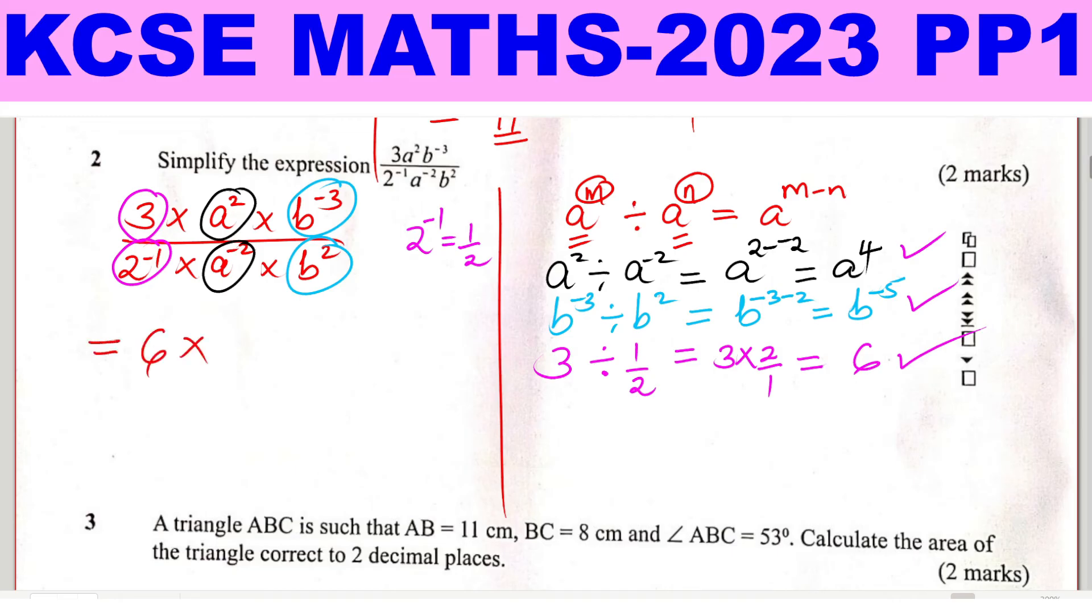We multiply. For a squared divided by a raised for negative 2, we got a raised for 4. And then for b raised for negative 3 divided by b squared, we got b raised for negative 5. So therefore the solution will be 6a raised for 4b raised for negative 5.